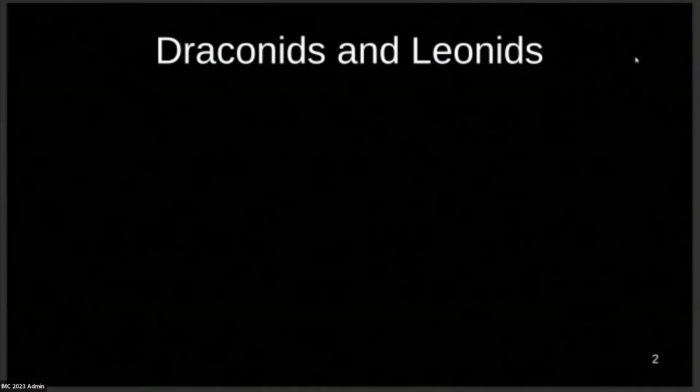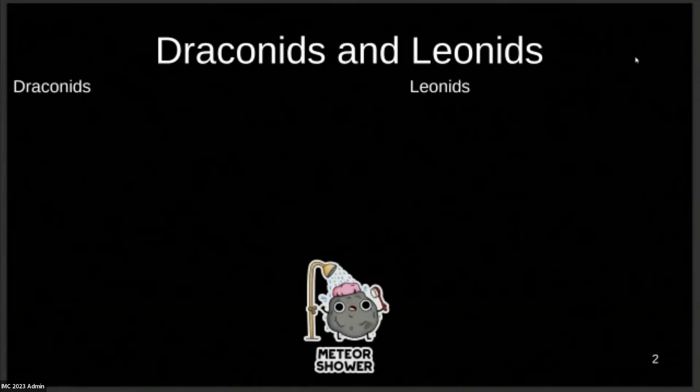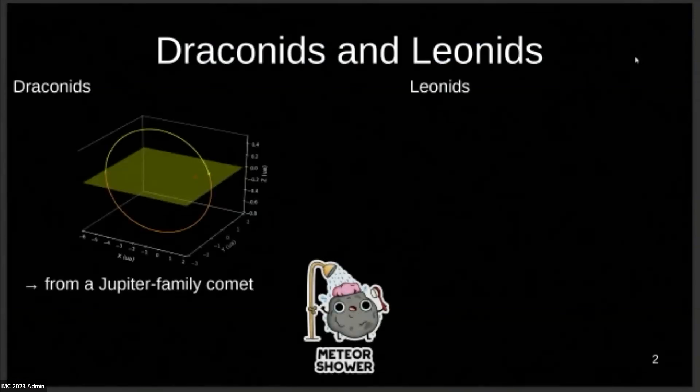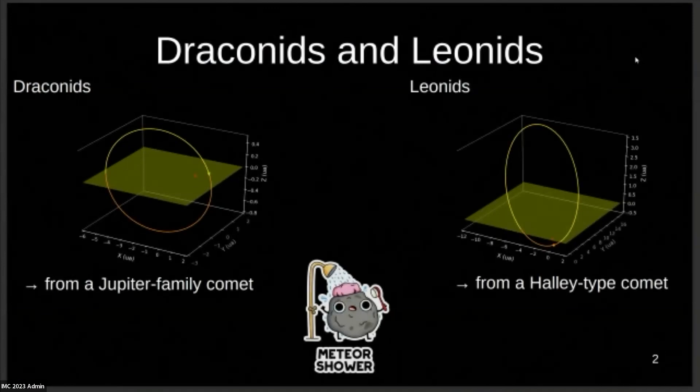So why the Draconids and Leonids? There are meteor showers that come from varying parent bodies. The Draconids come from a Jupiter family comet, and the Leonids from a Halley-type comet, which means we have very different dynamical environments, which can be interesting to analyze.